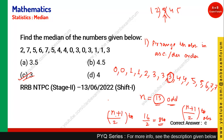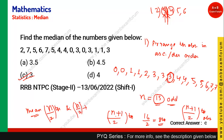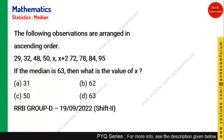If n is even, then you need to take the mean of two middle numbers. For example, if you have six observations, you cannot take a single midpoint. So you take the mean of the (n/2)-th observation and the (n/2 + 1)-th observation — the value in between these two observations is the median. We will see this in the next question.